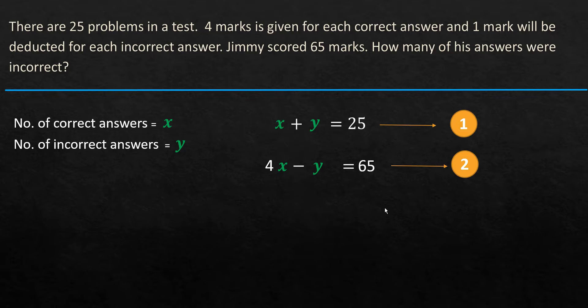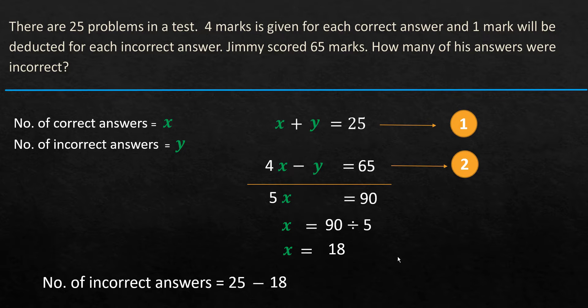So this is called a simultaneous equation. So we have two equations, and we are going to use elimination method to resolve and find out the values of x and y. So what is elimination method? What we are going to do is take these two and in this case add them. When we add them, x plus 4x will become 5x. y minus y will become 0. And 25 plus 65 gives you 90. So now in this, x is going to be equal to 90 divided by 5, which is 18. So 18 is the number of correct answers. So once we know this, we know y, because x plus y equals 25. So number of incorrect answers would be 25 minus 18, which is 7.